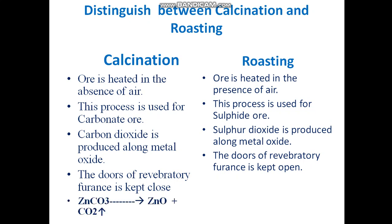As an example: in calcination, when zinc carbonate is heated in the absence of air, carbon dioxide is given out. In roasting, when copper sulphide is heated in the presence of air, we get copper oxide (the metal oxide) and sulphur dioxide is given out. This was a brief introduction to the roasting method, covering the definition and purpose of roasting, definition and purpose of calcination, and the distinction between calcination and roasting.